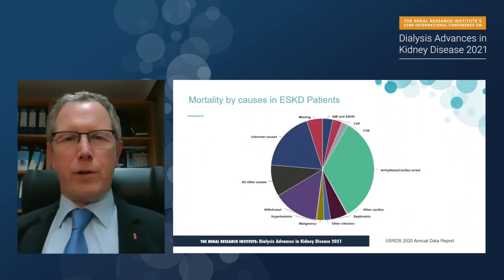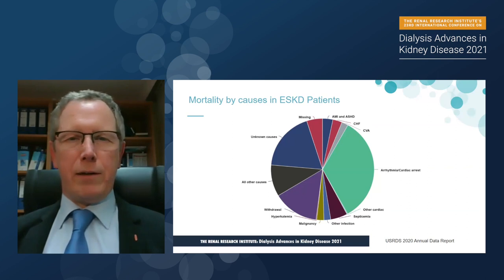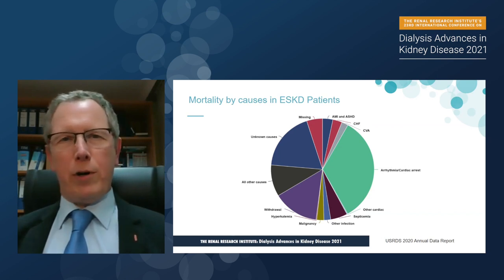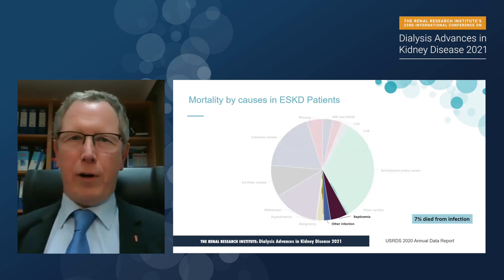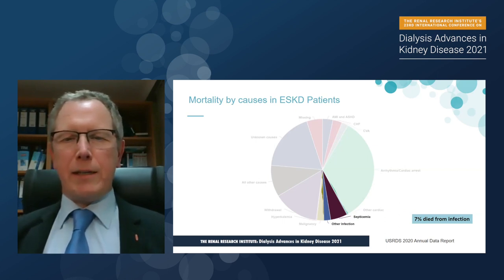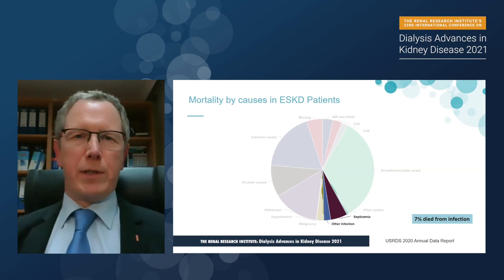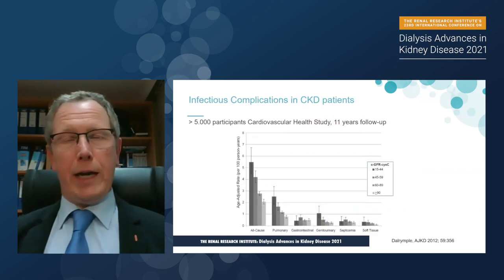This is also reflected in data from the USRDS — from the most recent USRDS report. Here are the mortality causes in patients with ESKD. You can see that 7% of the patients died from infections, either pulmonary infections or septicemia. So infection is a relevant topic in patients with chronic renal failure, as you may know.